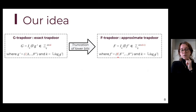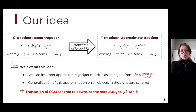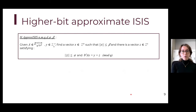We decided to extend this idea because the gadget matrix f can be interpreted as an object that is part of a set with a smaller modulus, divided by b to the power l. So we decided to generalize this idea — not just to the gadget matrix but to all objects in the construction. What we actually did is a kind of truncation of the F-trapdoor scheme to downsize the modulus q to q divided by b to the power d, where d is the parameter we will set.